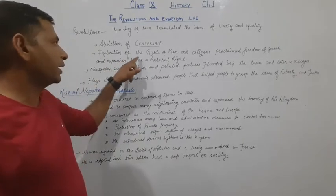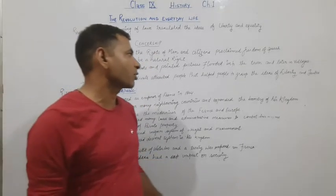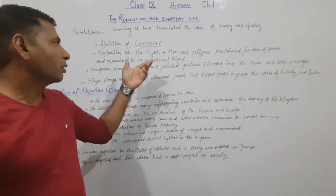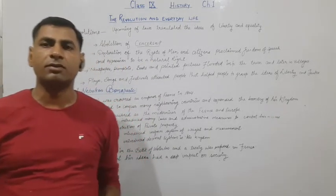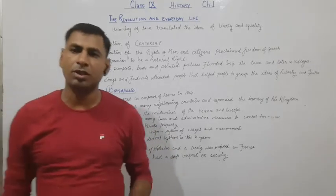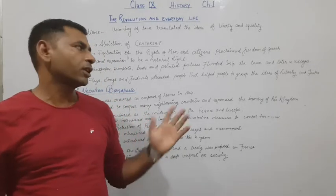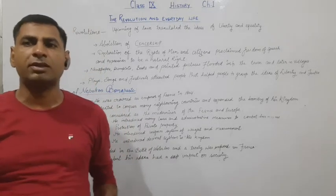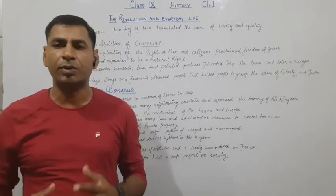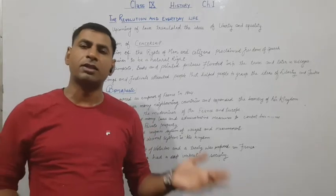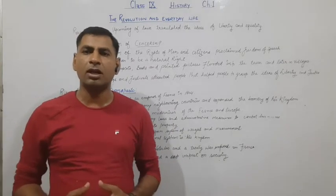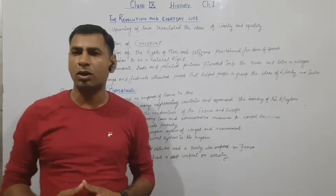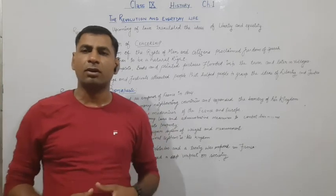The Declaration of the Rights of Men and Citizens proclaimed freedom of speech. As we studied, the rights of citizens were declared in the National Assembly — men especially as citizens. Freedom was given and the people's right to speech was granted. People felt that they now had the freedom to speak whatever they want — whether about the monarch, the clergy, or anybody else. They felt free to speak anything in public.